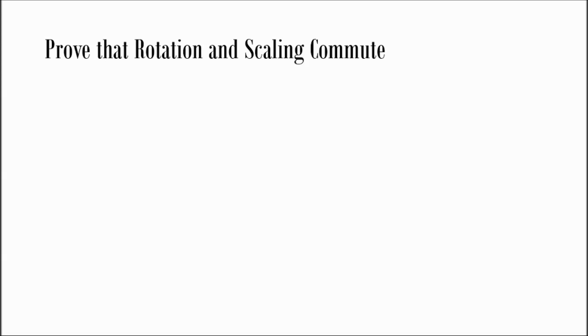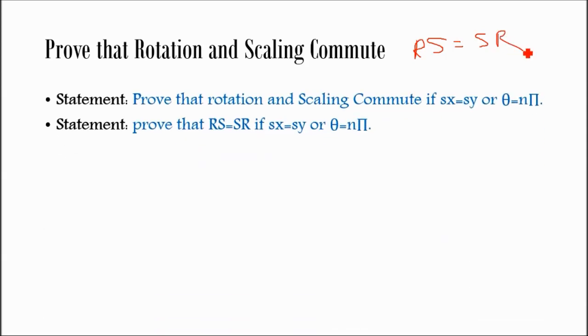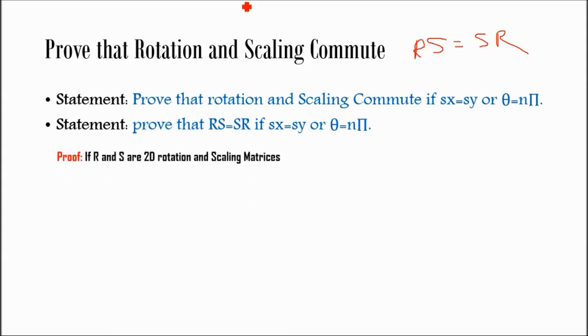After successive rotation, scaling, and translation, we will now prove some proofs. The question is: prove that rotation and scaling commute. This means you have to prove that R (rotation) multiplied by S (scaling) is equal to S multiplied by R. The statement to prove is that rotation and scaling commute if sx equals sy, or R-theta equals n-pi.